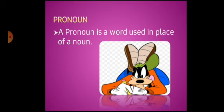Ankur was angry with Sangeeta. He said that she should not have teased the dog. In this sentence, 'he' stands for Ankur and 'she' stands for Sangeeta. The words Ankur and Sangeeta are nouns. Therefore, the words 'he' and 'she' are pronouns.